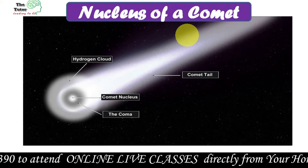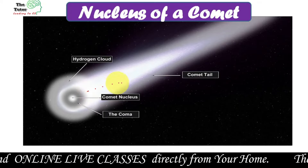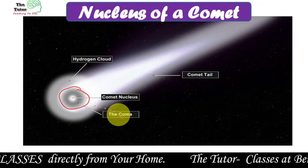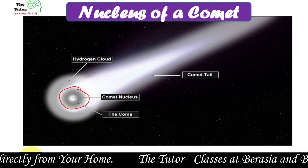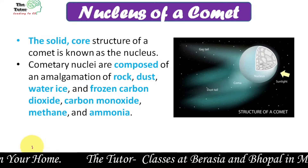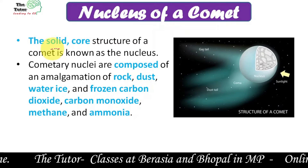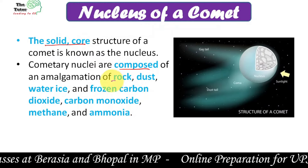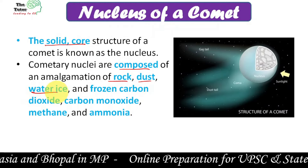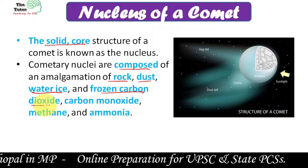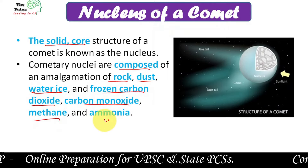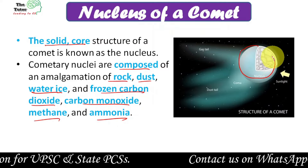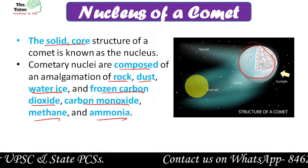The nucleus of a comet is its central point and is more solid than the other parts of the comet. The nucleus is a solid core composed of rocks, dust, water, ice, frozen carbon dioxide, carbon monoxide, methane, and ammonia. This is the nucleus of a comet.